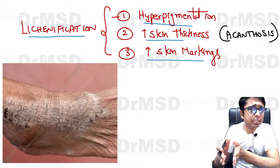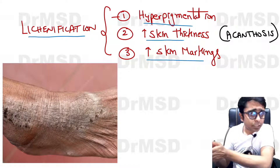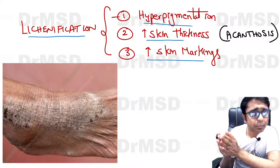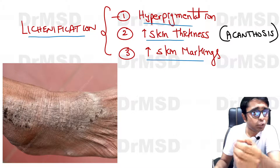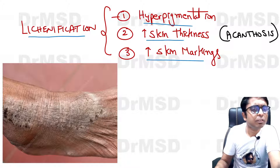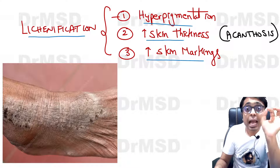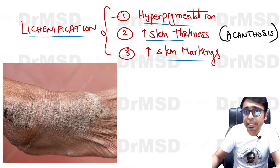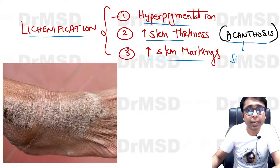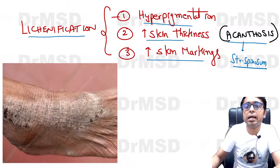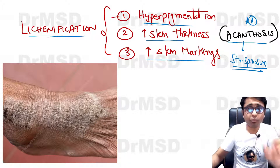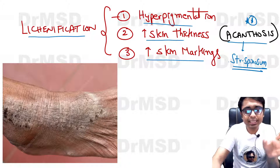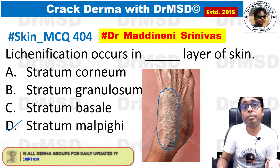As the condition becomes more and more chronic, the patient, because of constant pruritus — that is, itching — and scratching, the skin tries to protect itself by thickening. This thickening mainly happens in the stratum spinosum, and this is what is called acanthosis. In this MCQ, stratum spinosum is not mentioned directly.